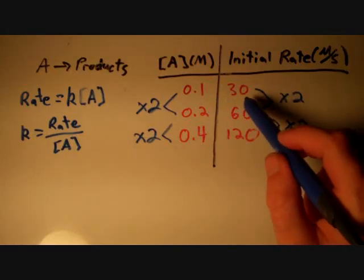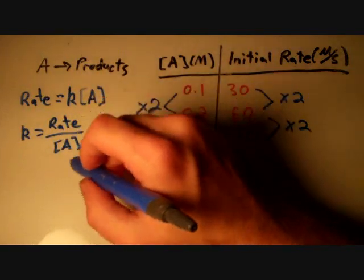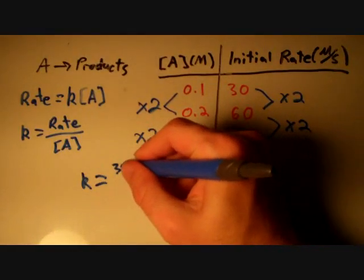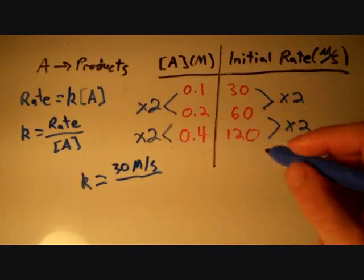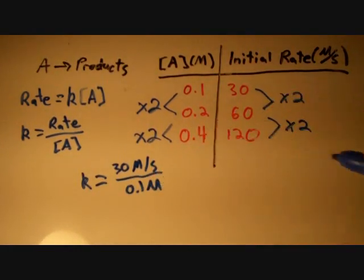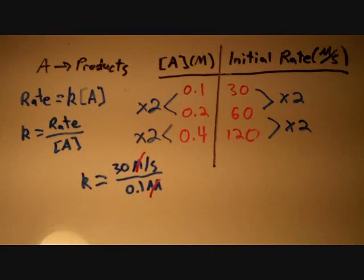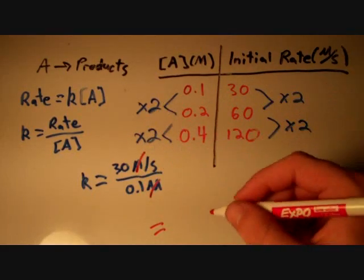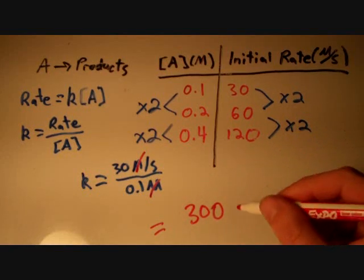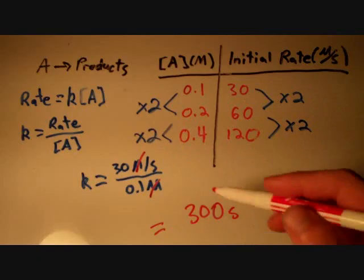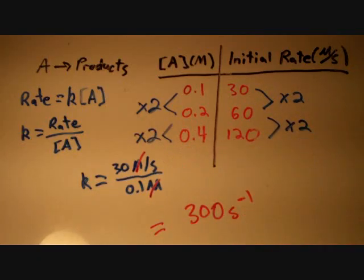Using the first row: the concentration of A is 0.1 molar and the initial rate is 30 molar per second. So k equals 30 molar per second divided by 0.1 molar. The molar units cancel, and we get 30 divided by 0.1, which is 300 reciprocal seconds — or seconds to the minus one. You have molar per second over molar and you end up with per second, or reciprocal seconds. That is the rate law and the rate constant for this reaction.